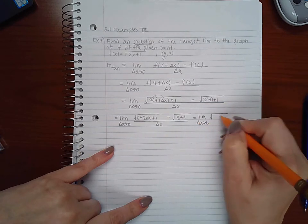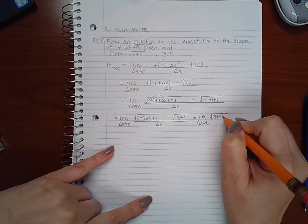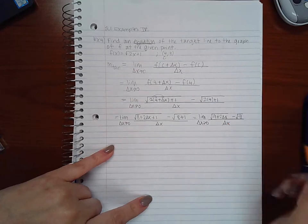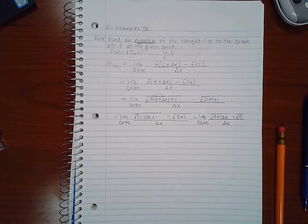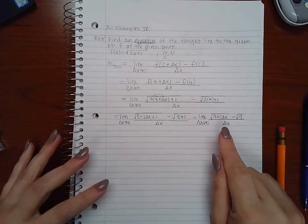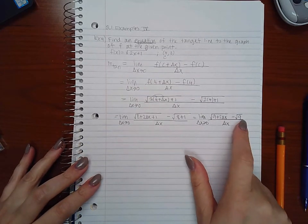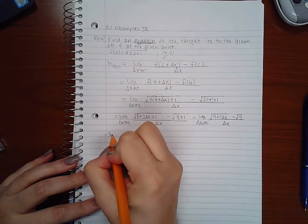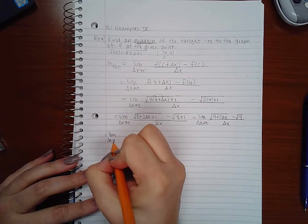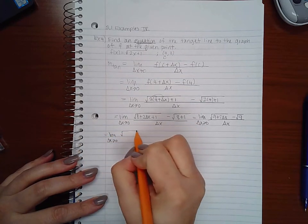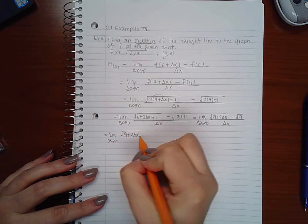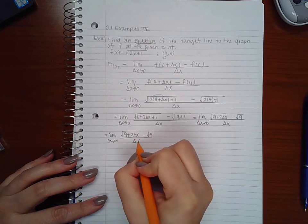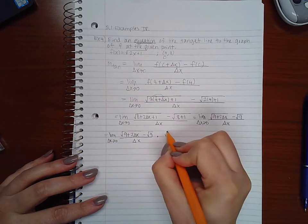And I get nine plus two delta x minus the square root of nine over delta x. Now if you recall from the previous chapter, the easiest way to reduce radicals is to multiply by the conjugate, so I'm going to end up taking this expression.